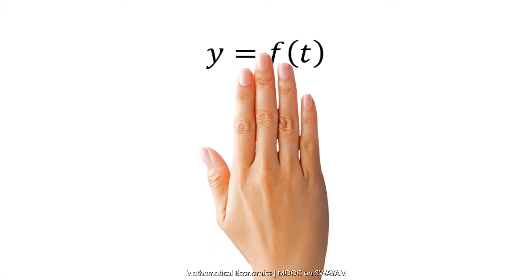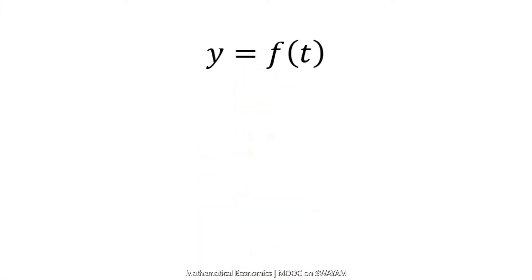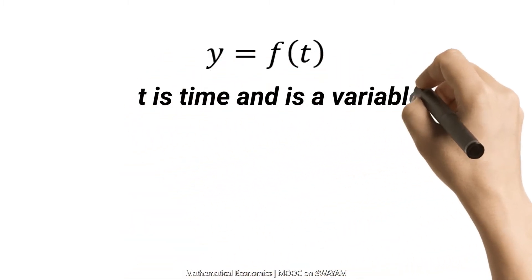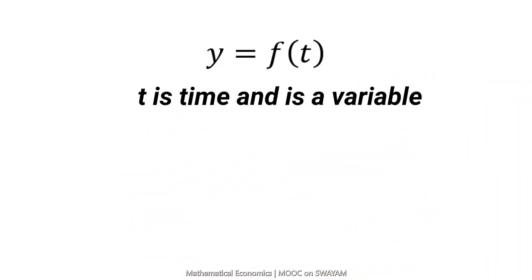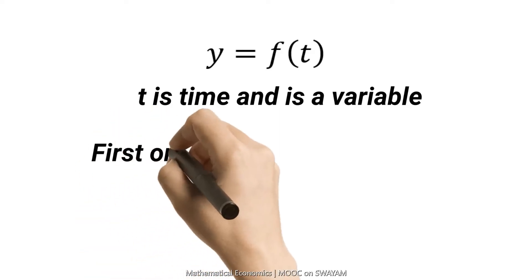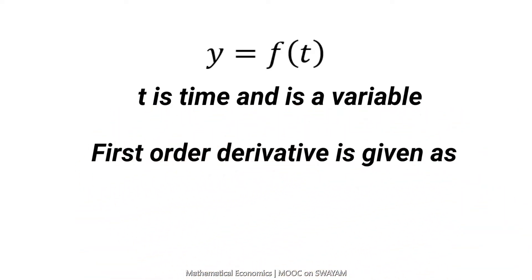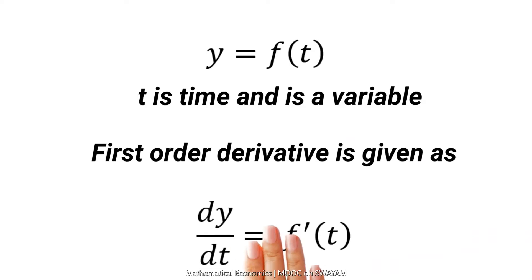Consider this function. Let t denote time, which is considered as a variable. The first-order derivative is given as dy/dt is equal to f'(t).